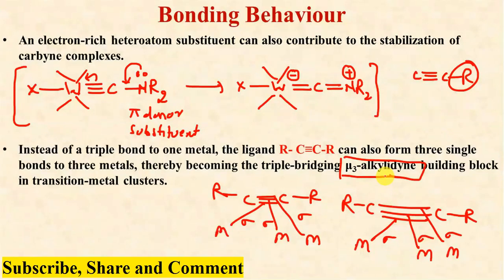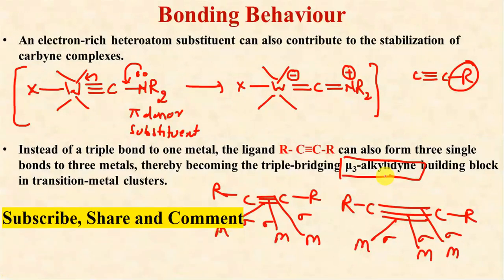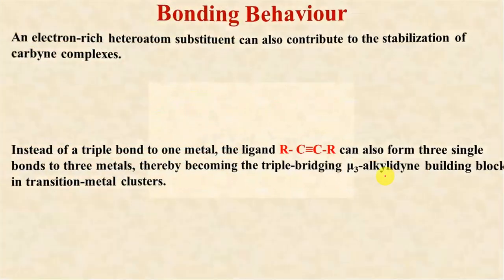In summary, doublet carbynes are considered to form Fisher-type carbyne complexes, whereas quartet carbynes form Schrock-type metal carbyne or metal alkylidyne complexes. Thank you.